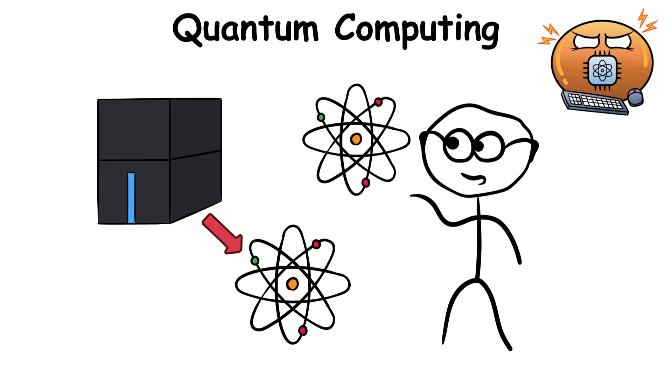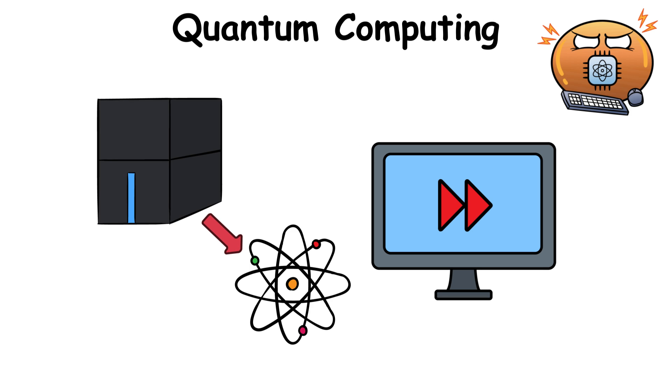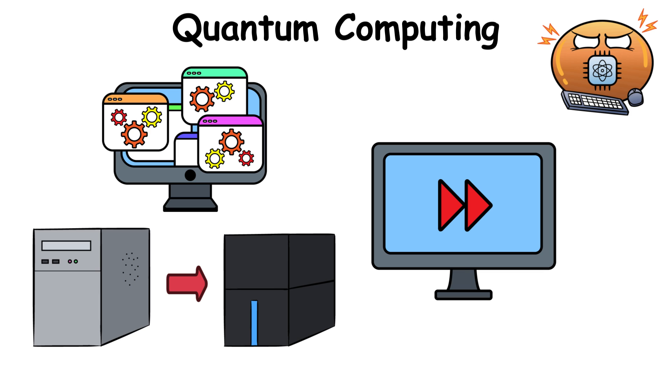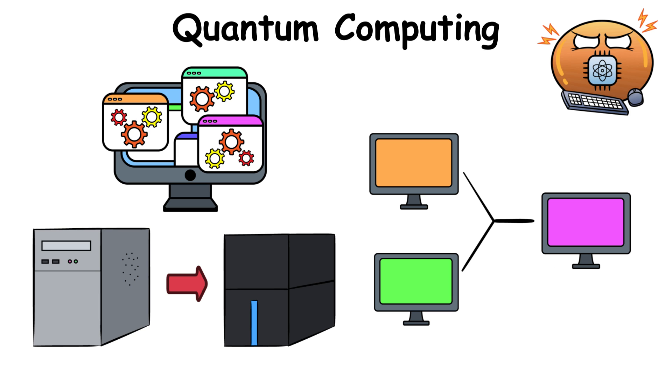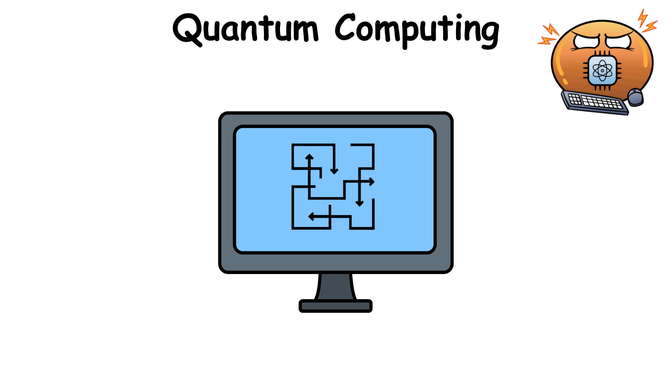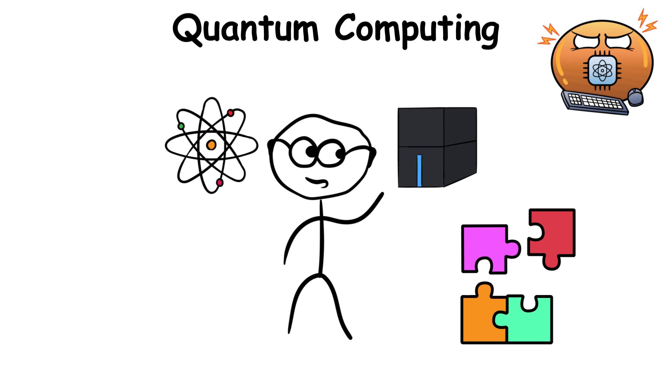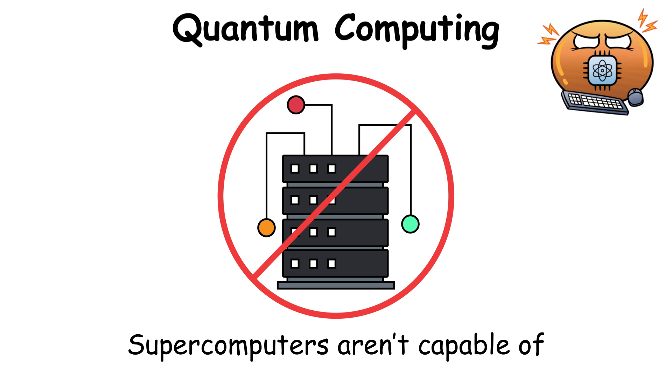In this case, superposition allows quantum computers to process information much faster than regular computers. They can do multiple tasks simultaneously while taking on multiple routes, allowing them to solve the most complex problems until they reach a solution. Of course, quantum computers use quantum mechanics to solve problems that even supercomputers aren't capable of.